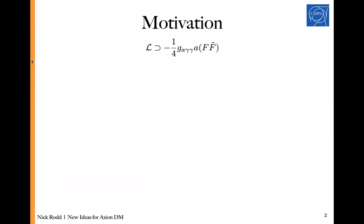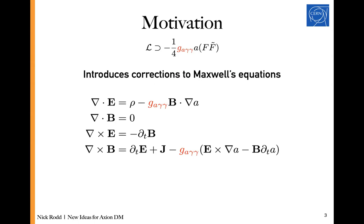As a particle physicist, the way you think about particles is that they can be written down in the form of some Lagrangian interaction. The axion comes in via this term: it couples to F F-tilde, where F is the electromagnetic field strength, so this gives some modification to electromagnetism. A here is the axion and the coupling that determines the strength between the axion and electromagnetism is g_{Aγγ}. Because all terms of the Lagrangian must have dimension four, g_{Aγγ} carries units of inverse energy. In practice, adding this term to the Lagrangian gives a modification to Maxwell's equations — a single correction to Gauss's law and two corrections to the Ampere-Maxwell equation.